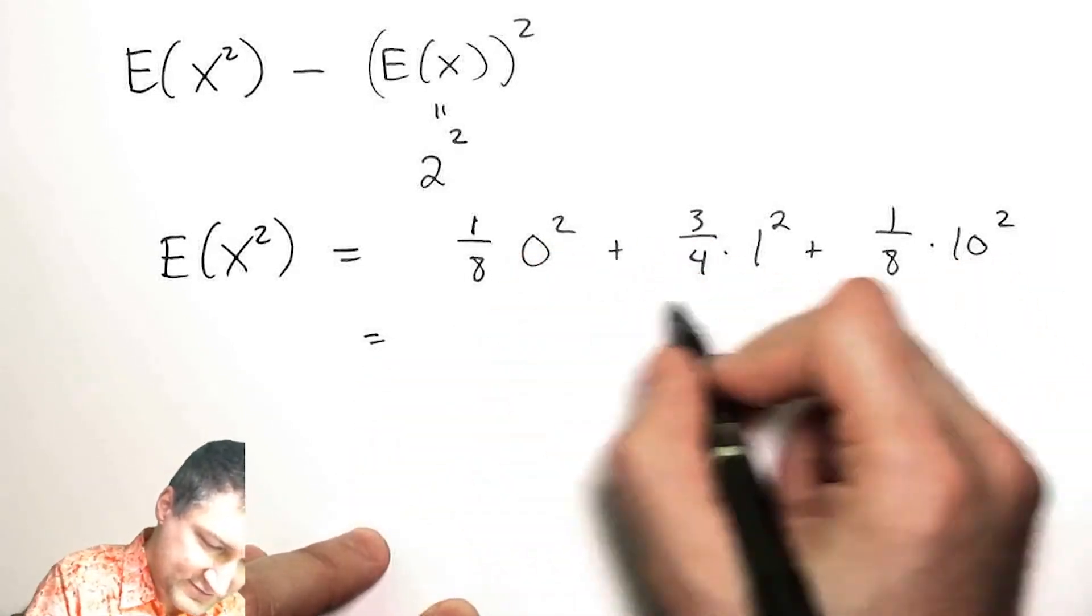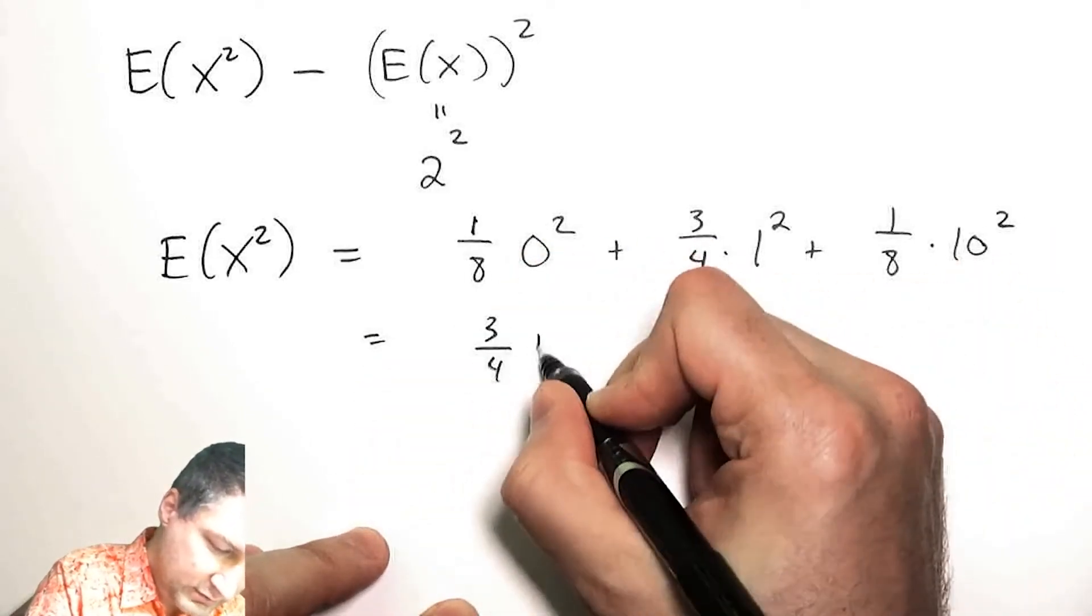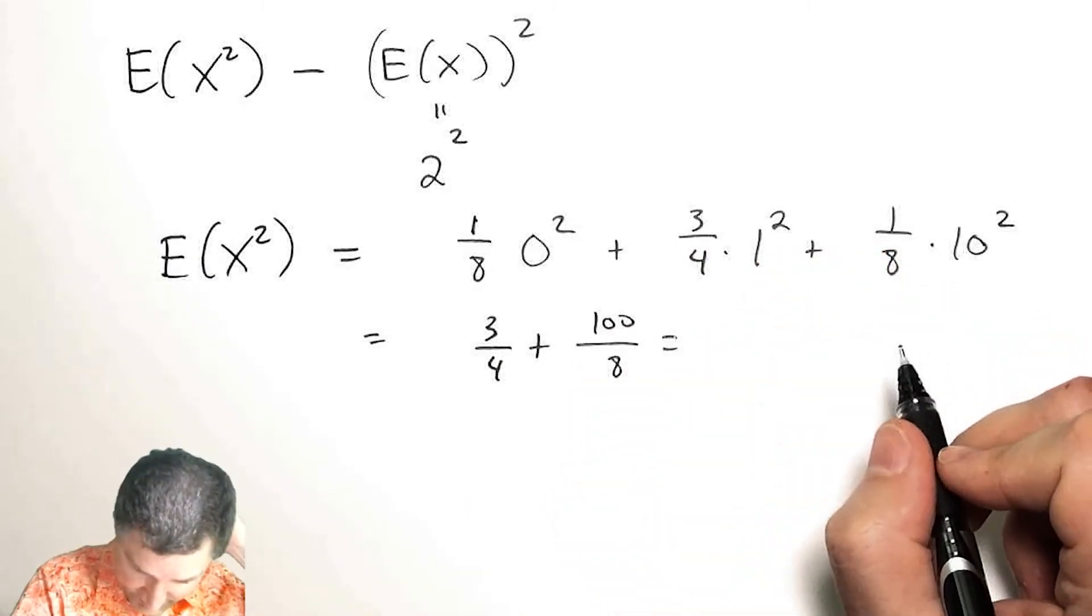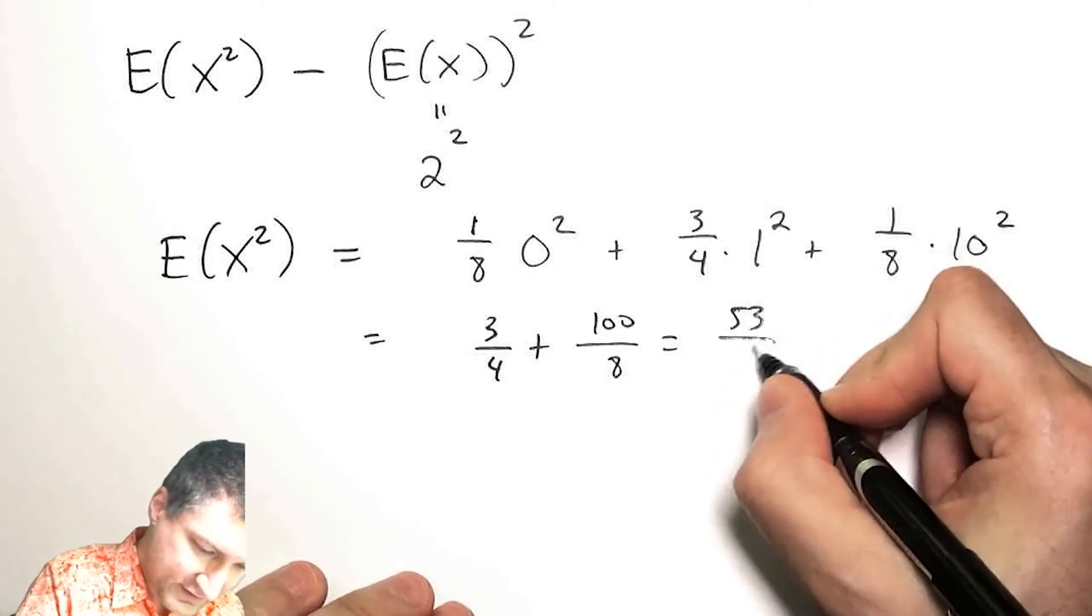So I have, this is 0, I have 3/4, plus 100/8, which is some messy thing, 53/4.